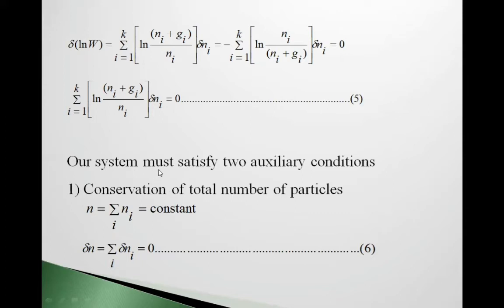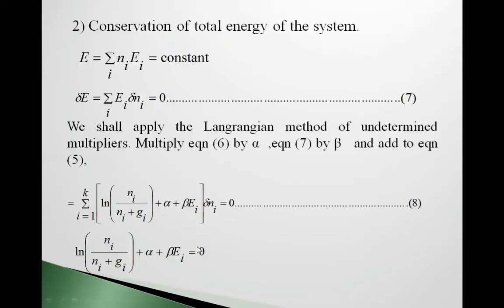Our system must satisfy two auxiliary conditions. First, conservation of total number of particles: N = Σᵢ Nᵢ = constant, so δN = Σᵢ δNᵢ = 0 (equation 6). Second, conservation of total energy: E = Σᵢ Nᵢ Eᵢ = constant, so Σᵢ Eᵢ δNᵢ = 0 (equation 7).